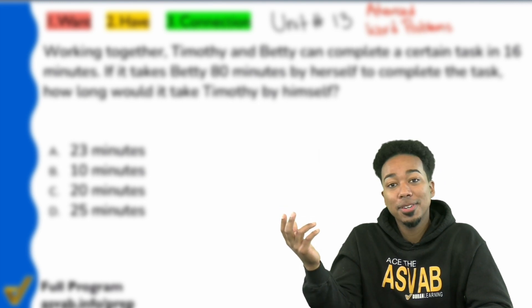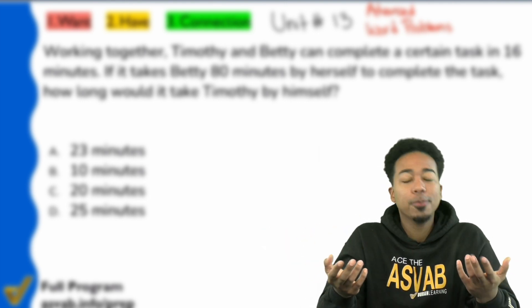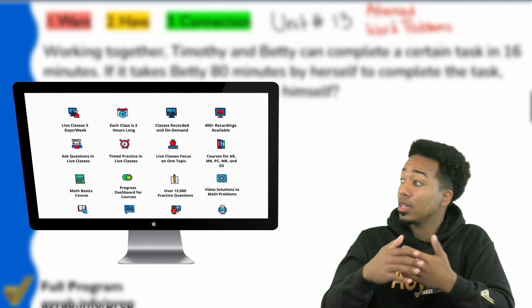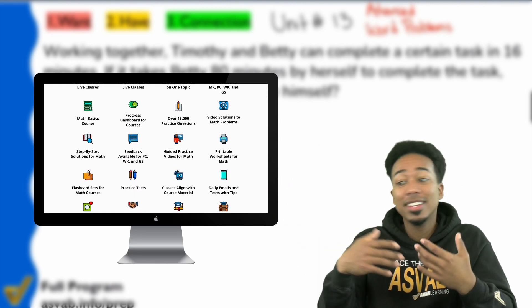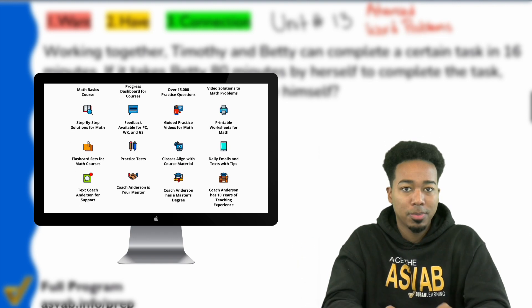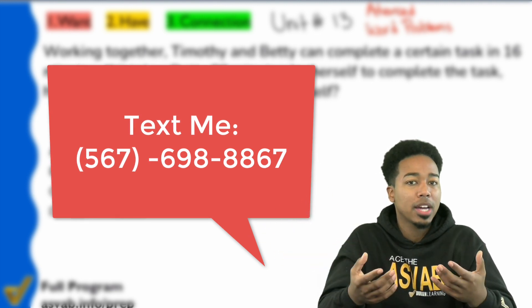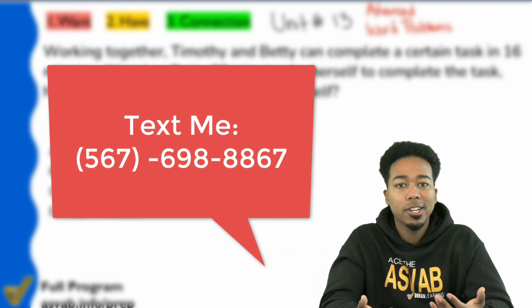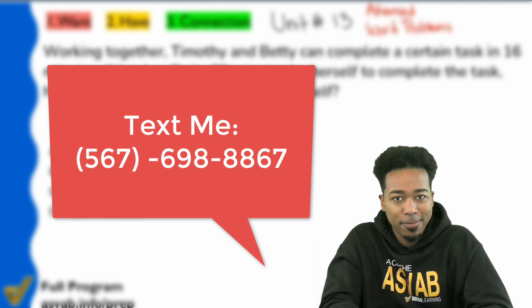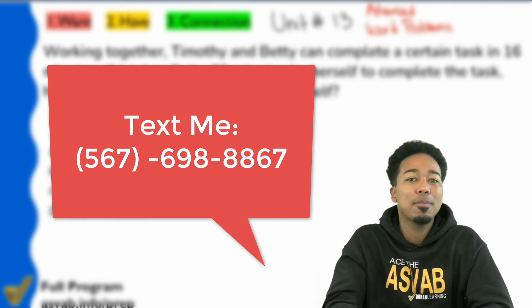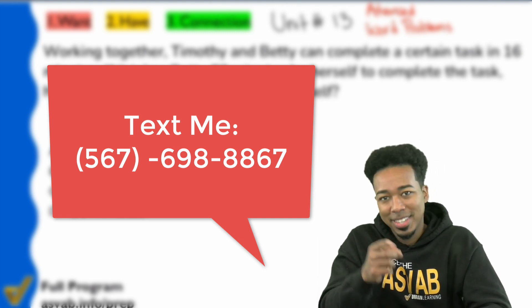Making it this far in this video, I'm going to go ahead and say it's safe to assume that you like the way I teach. If you want to learn more about my program where you can get all of my practice questions, including 15,000 that will help you succeed with step-by-step solutions, a lot of them having video solutions, then go ahead and reach out to me. My phone number is 567-698-8867. That way you're not stuck in the same loop that so many people are stuck in with retaking the ASVAB over and over again.